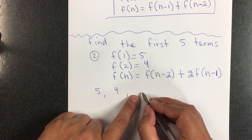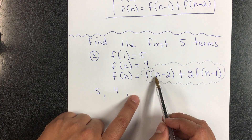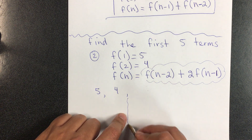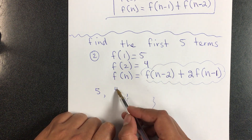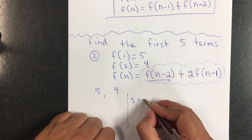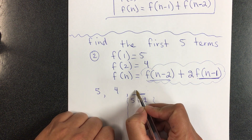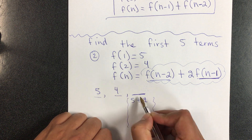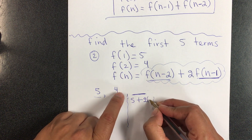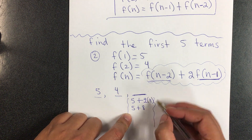How do I find the third term? I follow the formula. It says look at f of n minus 2, so going back two spaces — for f of 3 that's 5 — plus 2 times f of n minus 1, meaning the previous one, which is 4. So it's going to be 5 plus 2 times 4, which is 8, and that gives me 13.